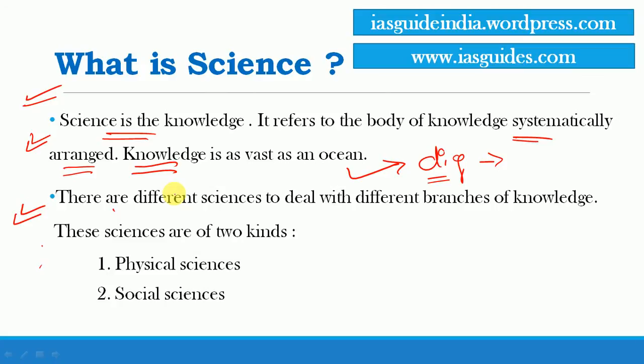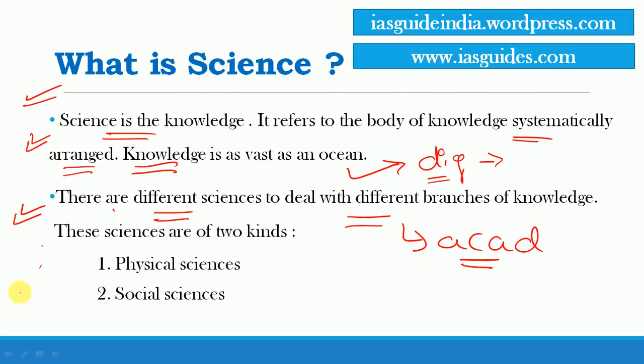It is humanly impossible to master all knowledge. Certain exceptions aside, no individual can master the whole of knowledge present in this world. However, for academic purposes we can divide science into different branches. In reality we cannot truly divide them, but academically we can divide science into physical sciences and social sciences.